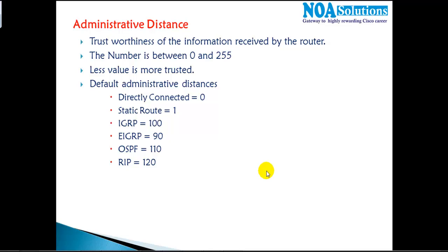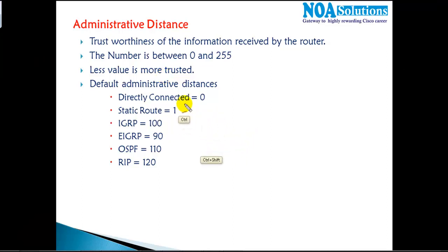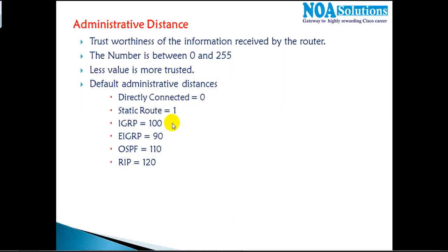In this section we'll try to understand what administrative distance is, how it's going to impact routing decisions, and what the default administrative distance values are. Administrative distance is the trustworthiness of the information received by the router — it decides which route is more trusted. If a router learns about the same route from multiple sources, which route it is going to trust is decided by the administrative distance.